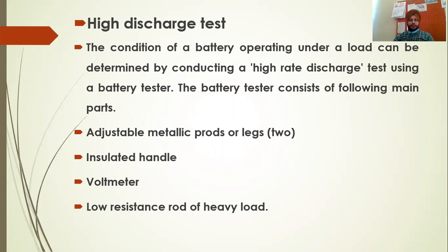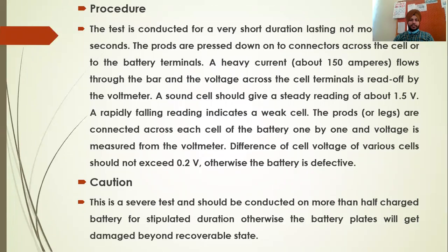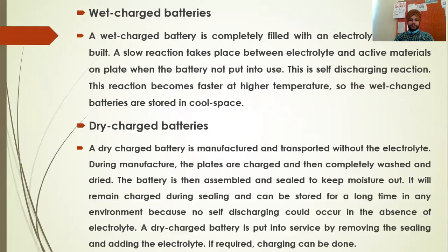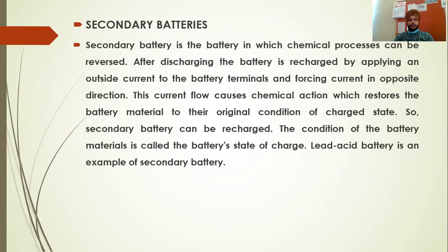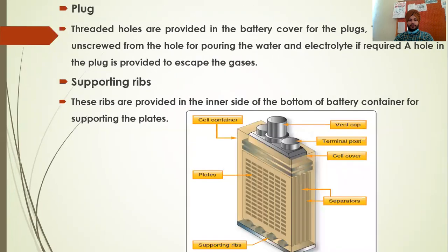In the high discharge test, we will test for 10–15 seconds under a very high current, which we provide across each cell. Every cell — the battery has a group of cells: 6 groups, 3 groups, or 9 groups. Six cells are mostly used. A cell is basically a group within the battery.